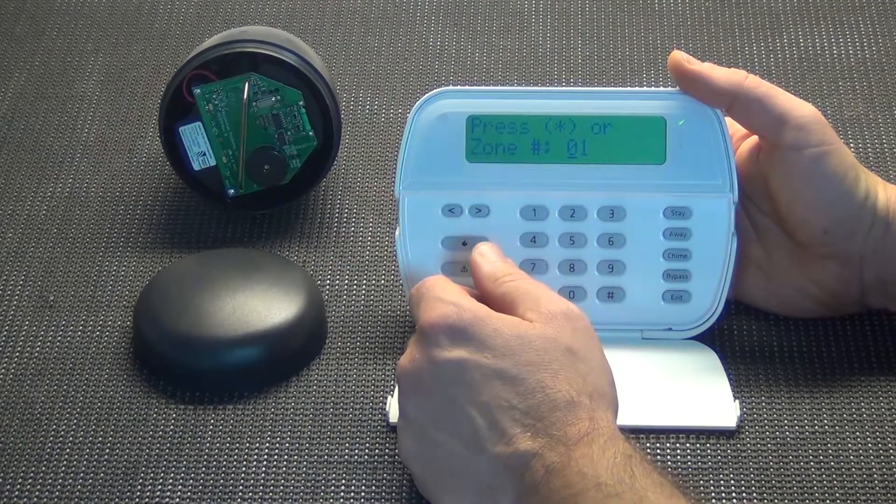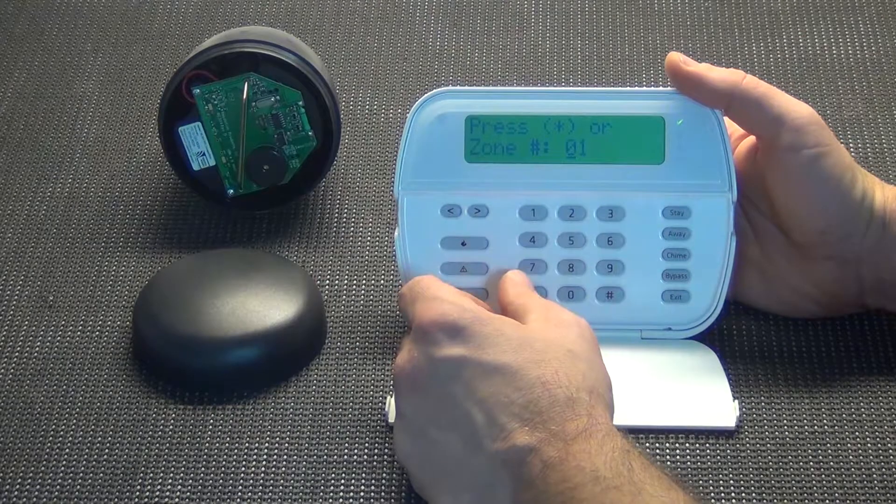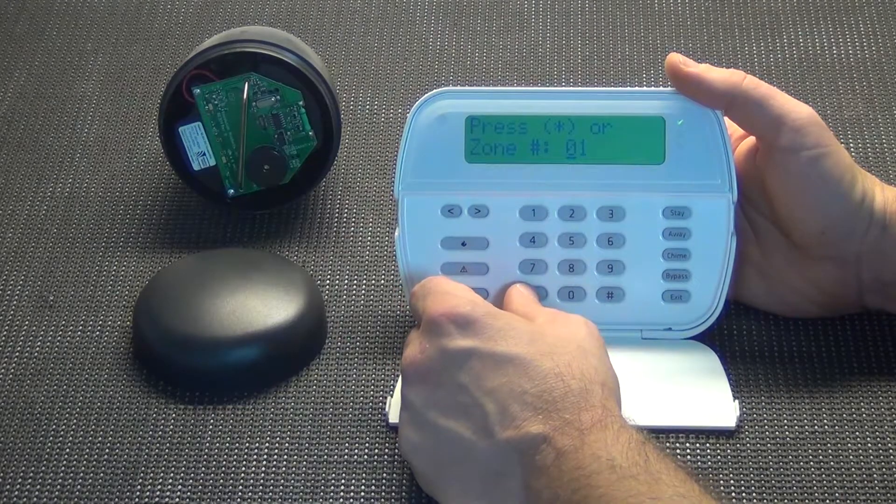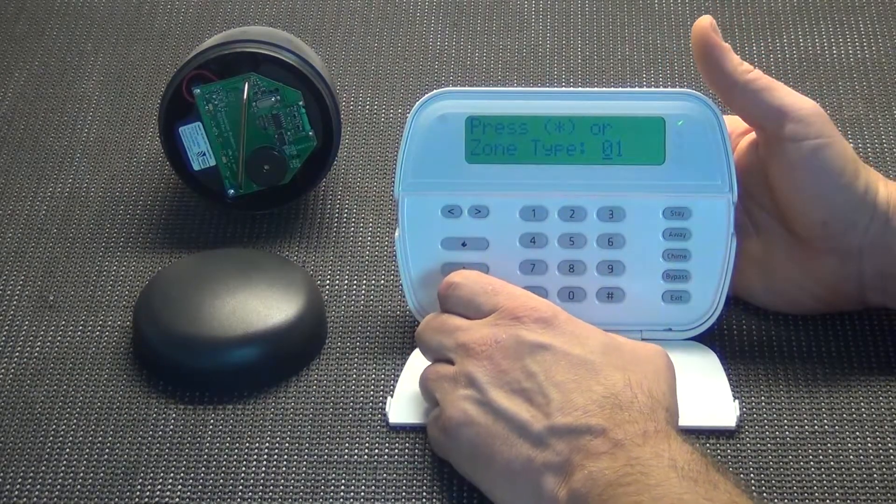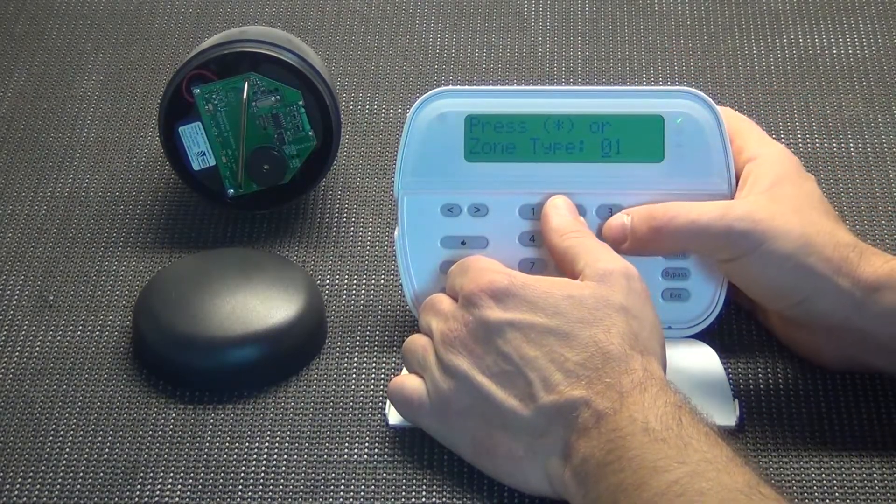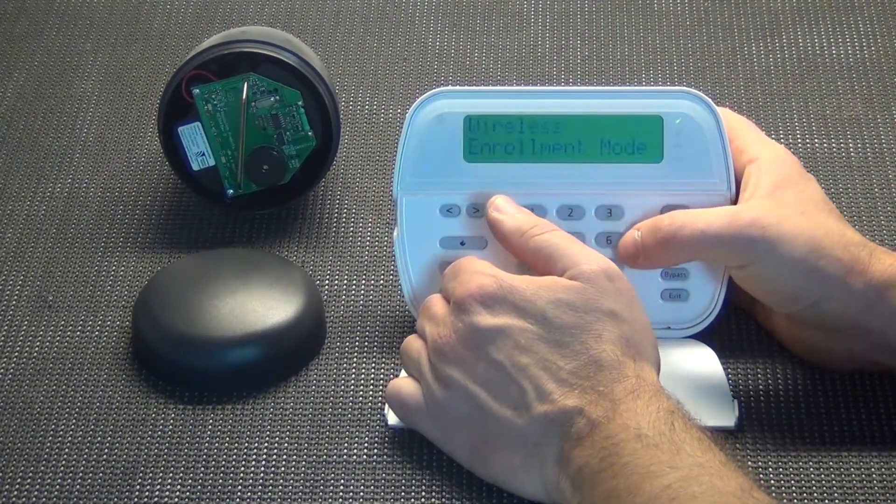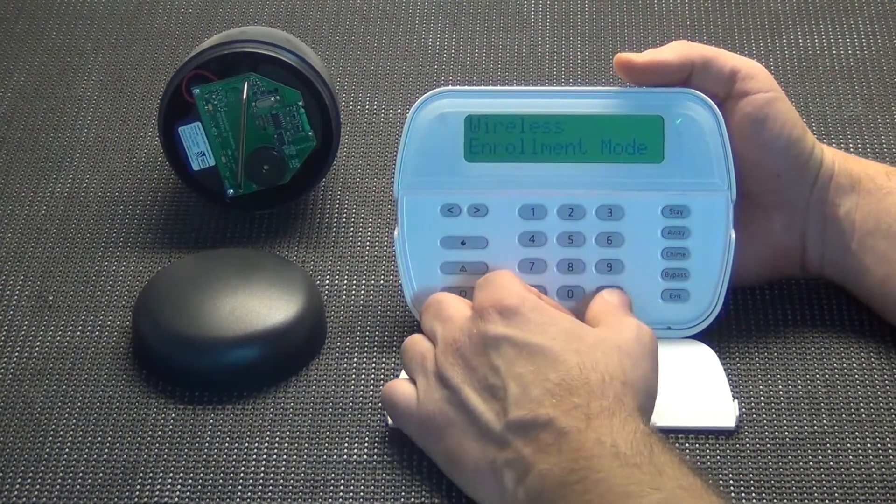I defaulted this panel, so the only thing we've got on here right now is this and zone one is fine to put that on. So we'll hit star to continue with that. Now your zone type, you want to set this up as a 24 hour non-burglary zone type. And that on a DSC system is a 26. And then it goes back to wireless enrollment mode. So that's learned in the system.